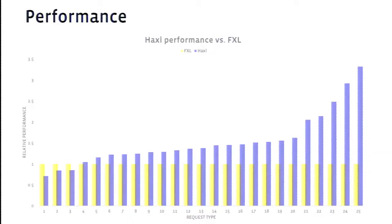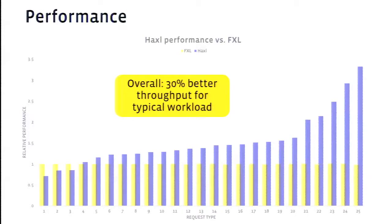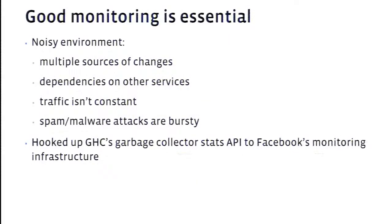For performance, we have a graph normalized to the old FXL system for our 25 most common request types — higher is better. The best-performing Haskell request performed about three times better than equivalent FXL. We had a few that didn't perform quite as well. Overall, we found 30% better throughput from the Haskell system than the old system. These measurements were done quite a long time ago, and we've made further improvements since then.